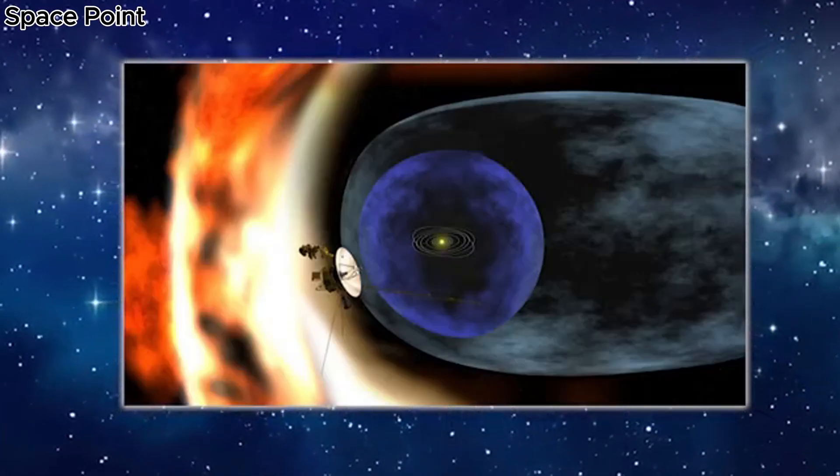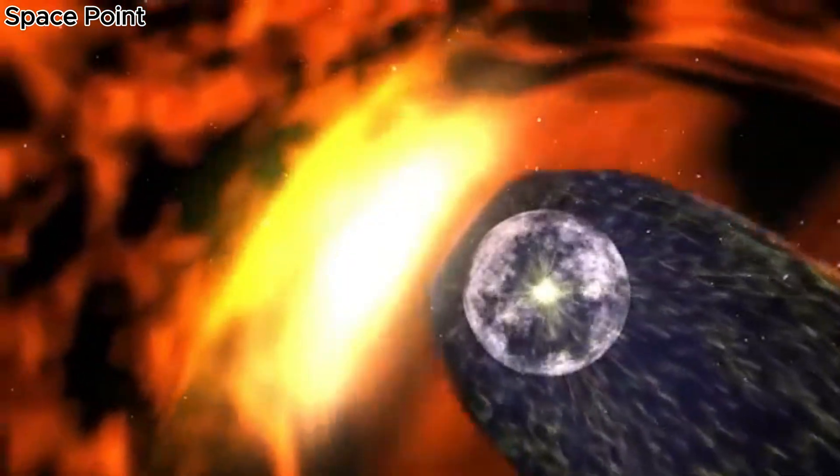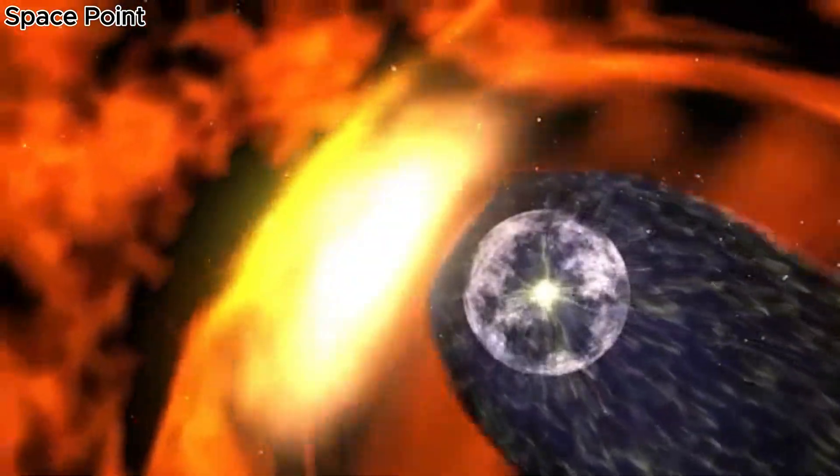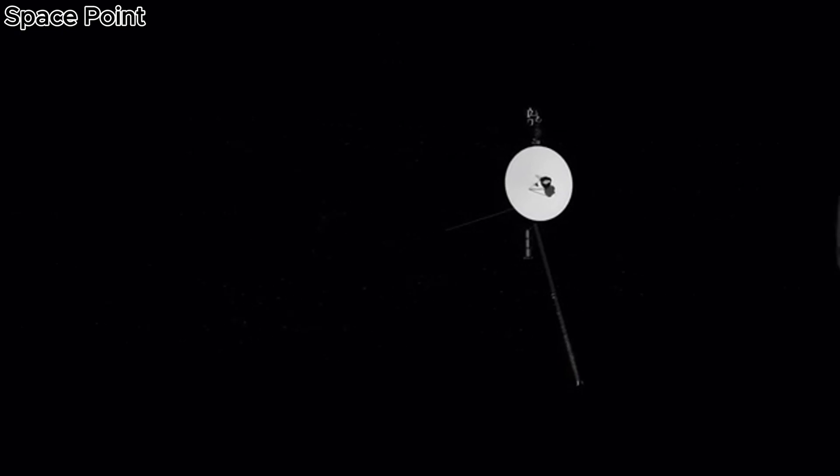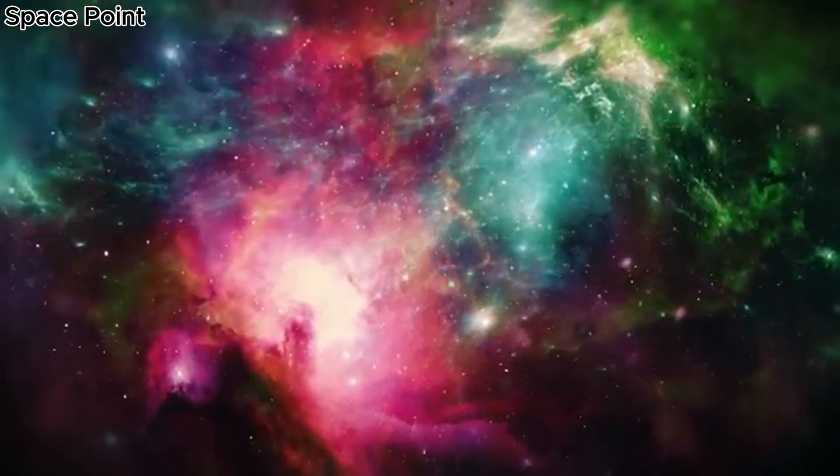The implications of this are vast. For one, it alters the understanding of how space beyond the heliopause is organized. If Voyager 1 has found just one of these interstellar corridors or magnetized rivers, then it's likely not solitary. Our galaxy may be threaded with such regions, shaped over eons by forces still not fully understood.